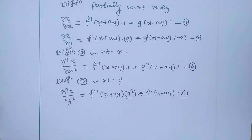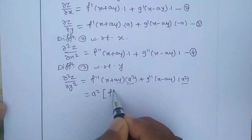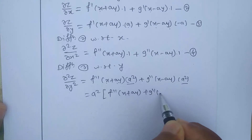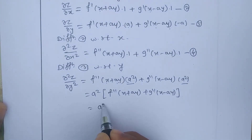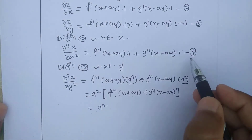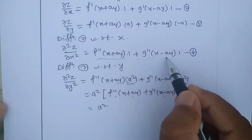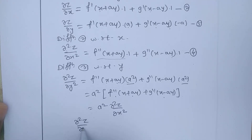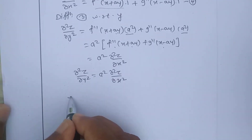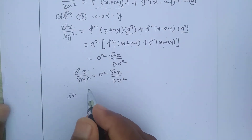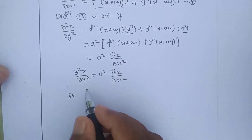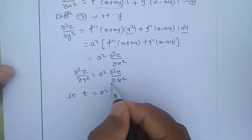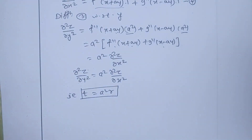Both terms contain a², so taking a² as common: ∂²z/∂y² = a² · [f''(x + ay) + g''(x - ay)]. From equation number four, f''(x + ay) + g''(x - ay) is nothing but ∂²z/∂x². So we get the differential equation: ∂²z/∂y² = a² · ∂²z/∂x², that is t = a²r. This is our final answer for the first example.